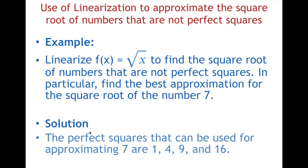Solution. The perfect squares that can be used for approximating 7 are 1, 4, 9, and 16. Why? It's because they are the closest perfect squares to 7.